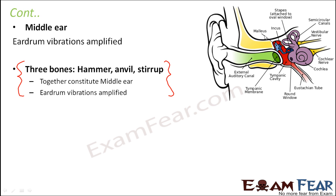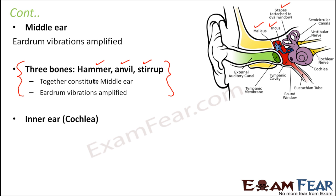What are the three bones? Malleus, Incus, and Stapes — these three bones are also called hammer, anvil, and stirrup. These three bones together form the middle ear and they together help in the amplification of the eardrum vibrations.